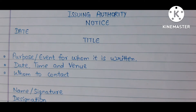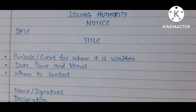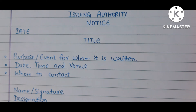What are the things covered in a notice? You have to state the purpose of the notice. You have to mention the date, the time, and the place. You have to provide contact details and the address. And at the end, you have to write the name, signature, and designation.